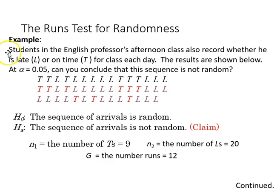Here's another example. The same professor has an afternoon class, and the students there also record lateness, or being on time. Here is the data from that. The null we're going to be testing is whether the sequence of arrivals is random again, and the alternative is that they're not random.